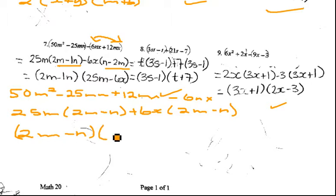So sometimes you do have to switch the order. Now let's take a look at your answer. You had 25m minus 6x, and 2m minus n. So you had the 2m minus n, but this was wrong here. So that one little mistake.